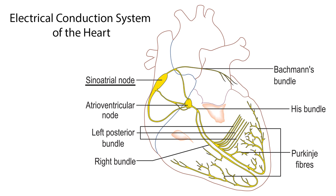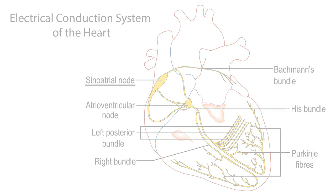Welcome to this video tutorial on caring for a patient with a pacemaker. An artificial pacemaker is a small device that uses electrical impulses to help control heart dysrhythmias. A block in the heart's electrical conduction system or a malfunction of the heart's natural pacemaker, the SA node, can cause a heart dysrhythmia. The primary purpose of the pacemaker is to sustain an adequate heart rate that will maintain sufficient blood pressure and perfuse all organs adequately.